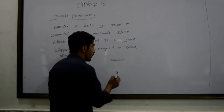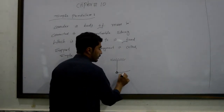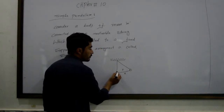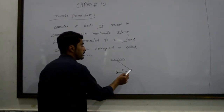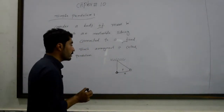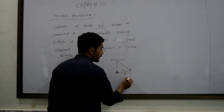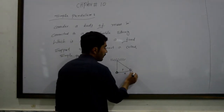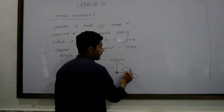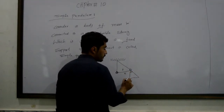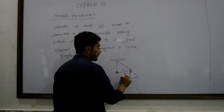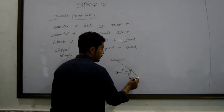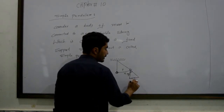When we apply a force and displace the mass, a distance is covered. Work is done and a restoring force acts on the point mass. The body's weight acts in the downward direction. We lift the mass to an angle, and the weight mg can be resolved into components: mg sin theta and mg cos theta, where sin theta equals perpendicular divided by hypotenuse.